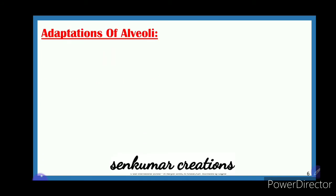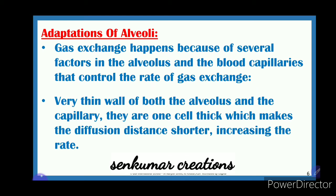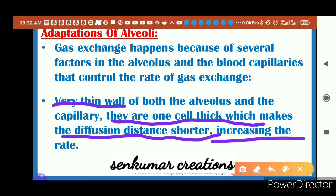What are the adaptations of the alveoli that allow successful gaseous exchange? Gaseous exchange happens because of several factors in the alveolus and blood capillaries that control the rate of exchange. The first adaptation is a very thin wall — both the alveolus and blood capillary are one-cell thick. This makes the diffusion distance shorter, increasing the rate of diffusion.